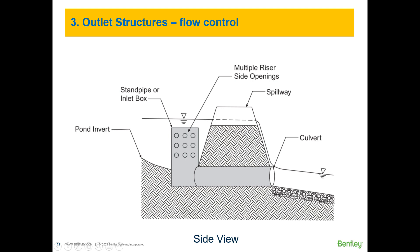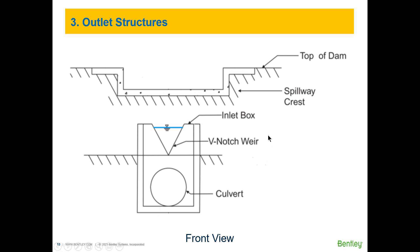Those can be called overflow spillways, emergency spillways. Here's a front view of another outlet structure. This one has a triangular weir that allows flow into an inlet box and then out the culvert. Notice that this pond also has an overflow spillway.